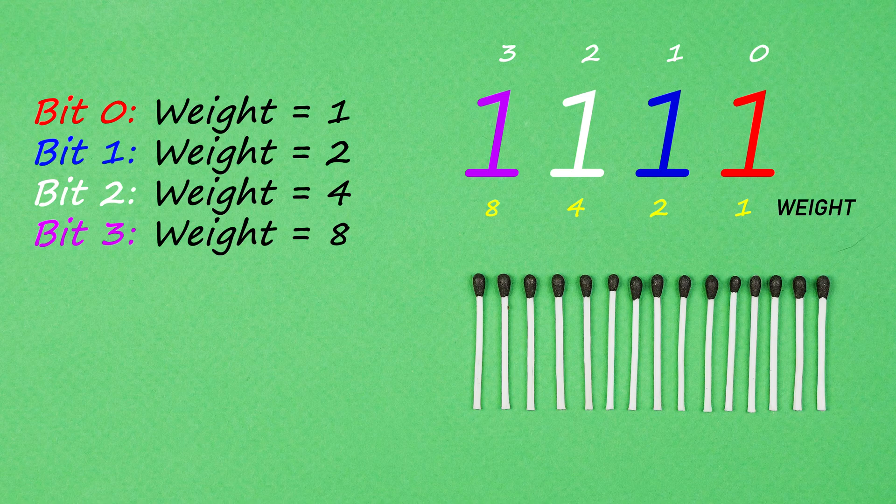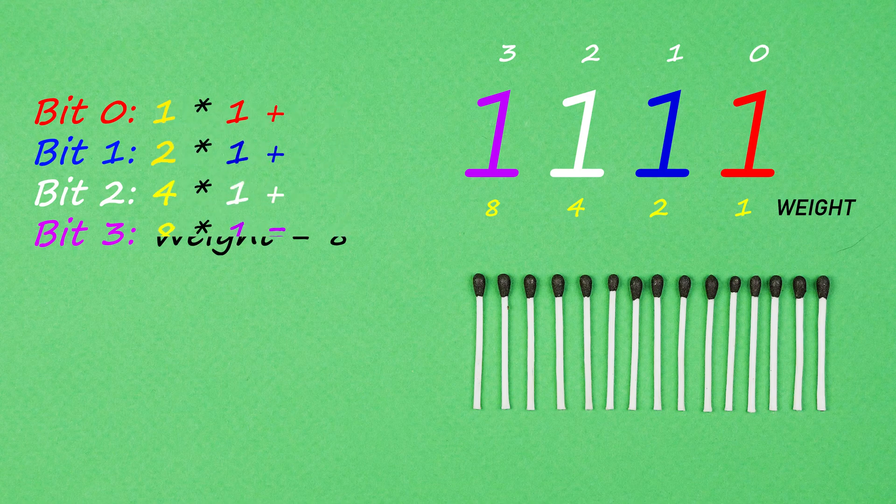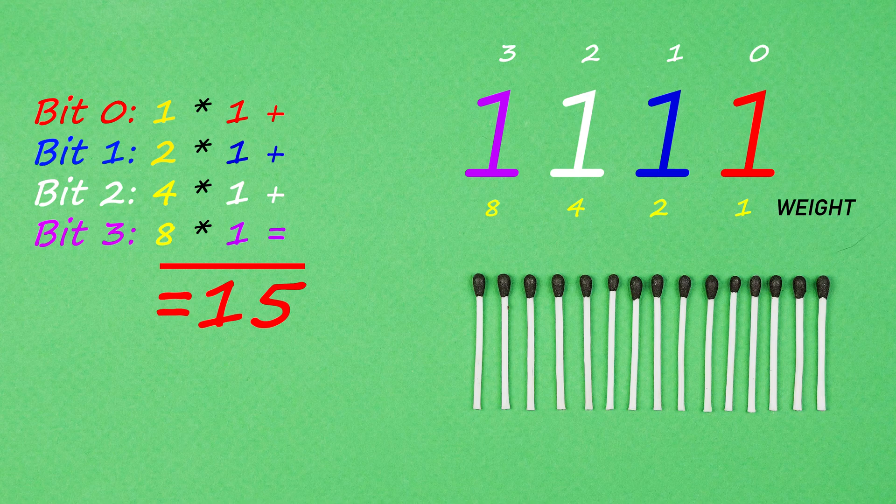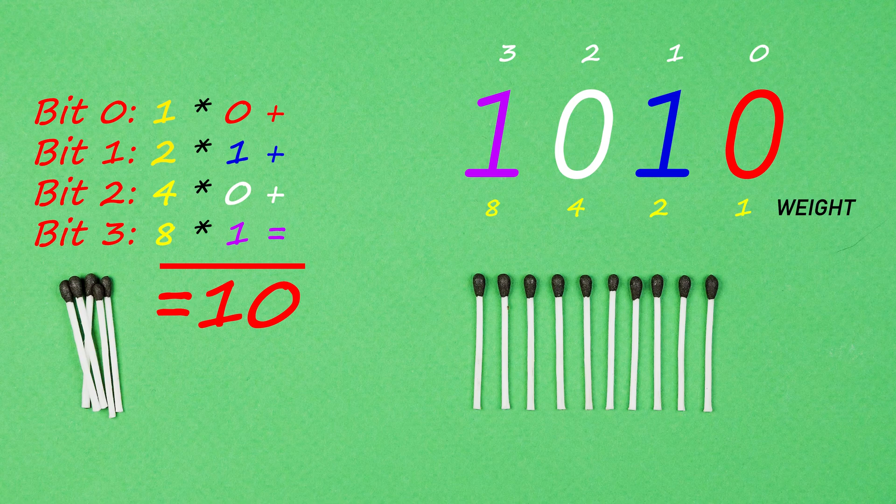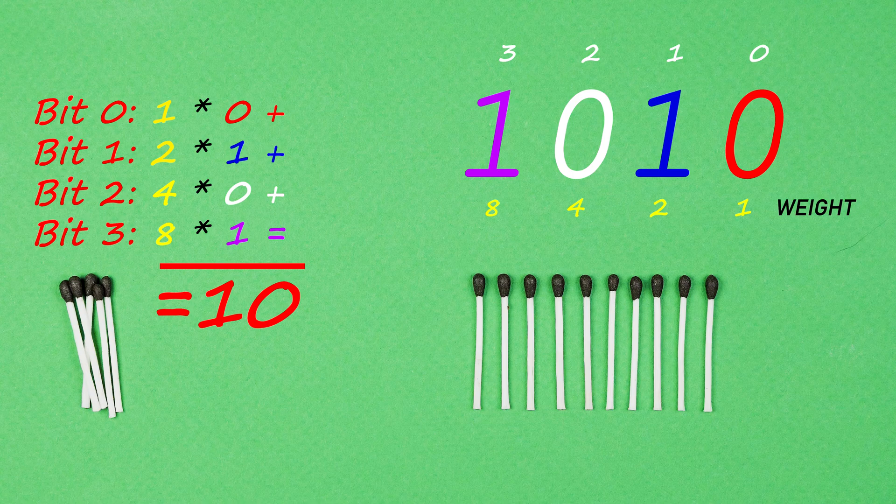Now let us apply this knowledge and use bit weights to convert our binary numeral to decimal. All we have to do is multiply the value of each bit by its weight, then add up the results. Like this. Now let us rewind and try it on a different number. 1 times 0 plus 2 times 1 plus 4 times 0 plus 8 times 1 equals 10.